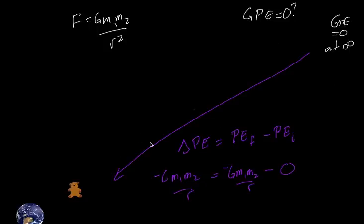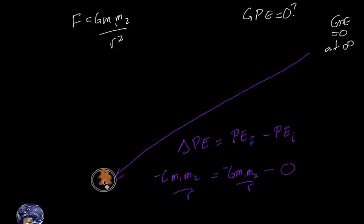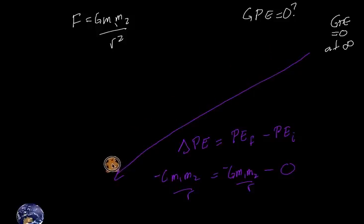Because we start at infinity, it ends up being a negative value — the change goes from a high value to a low value. If I increase the distance I'm raising the GPE: a really large negative number becomes a smaller negative number, getting closer to zero. The change is positive — my final small negative minus my initial large negative gives a positive result. Moving closer gives a negative change: a large negative final minus a small negative initial gives an overall negative change.